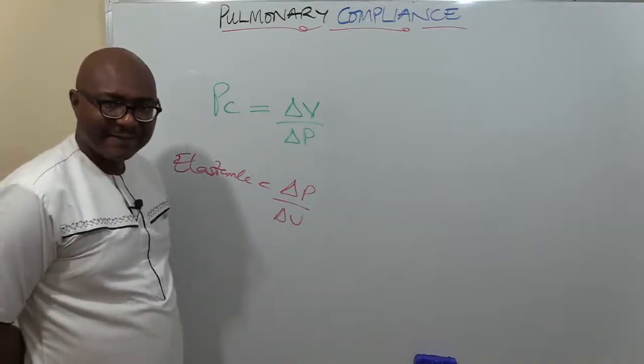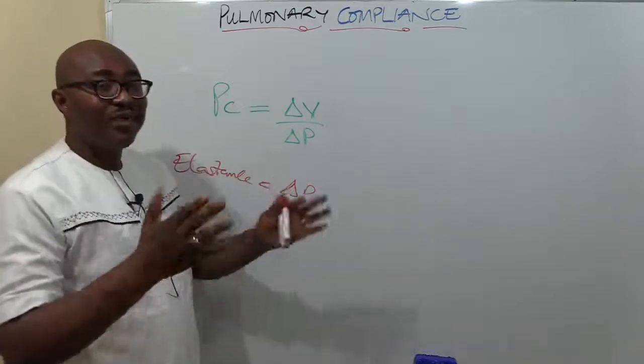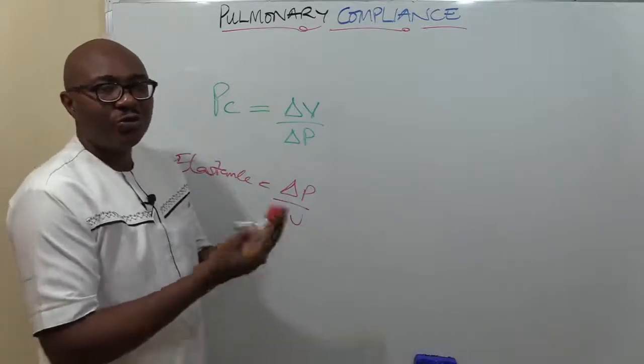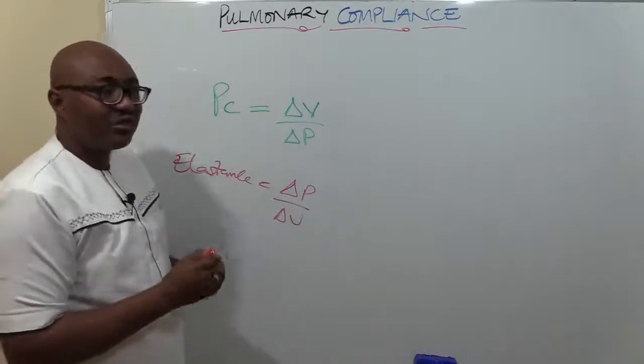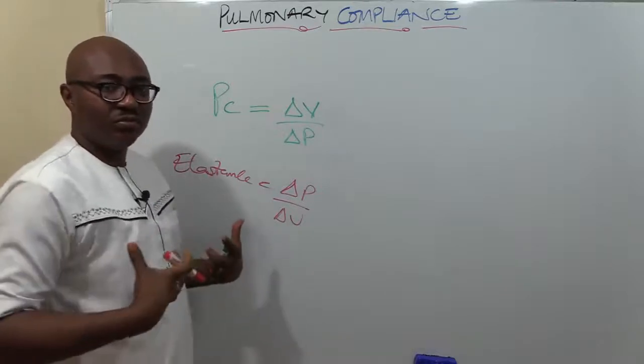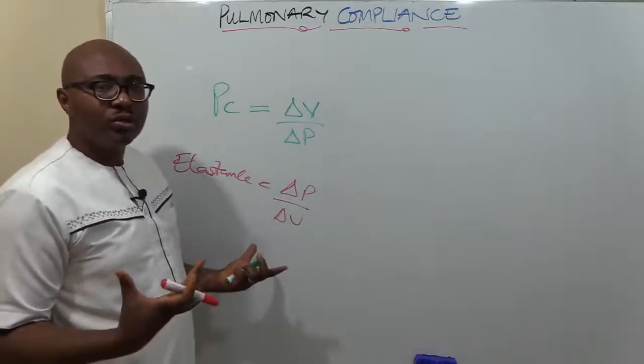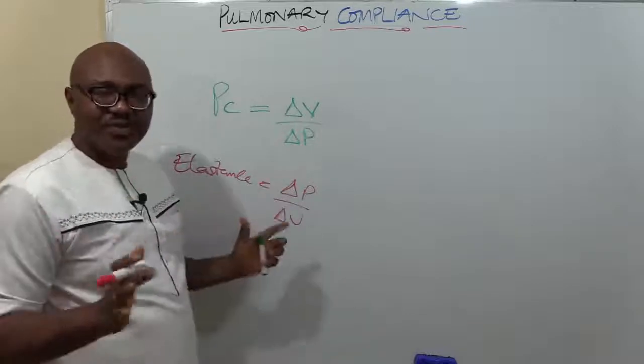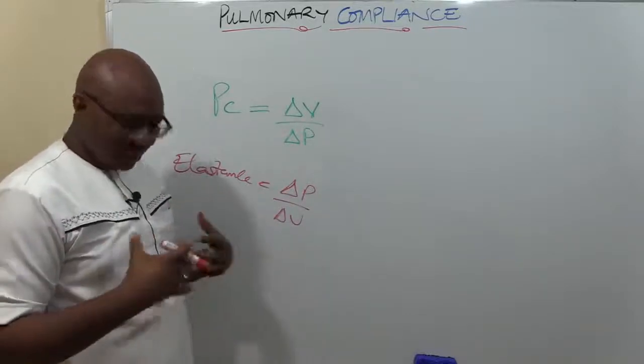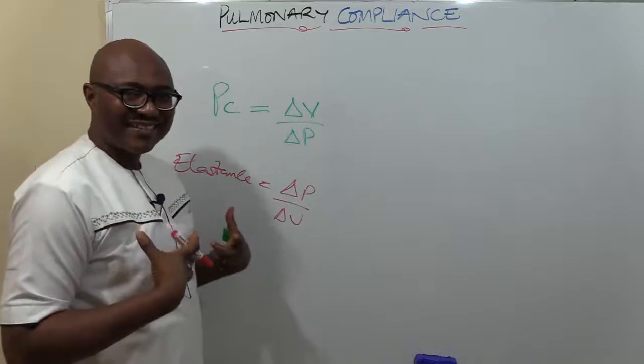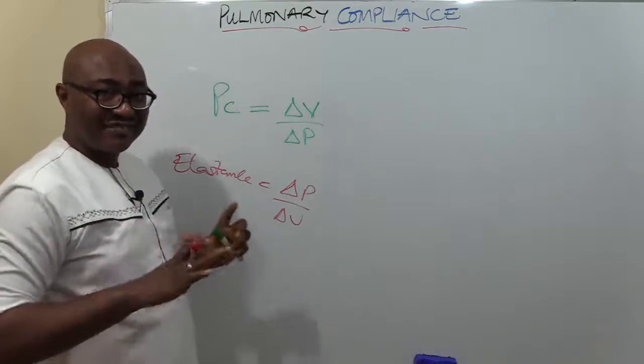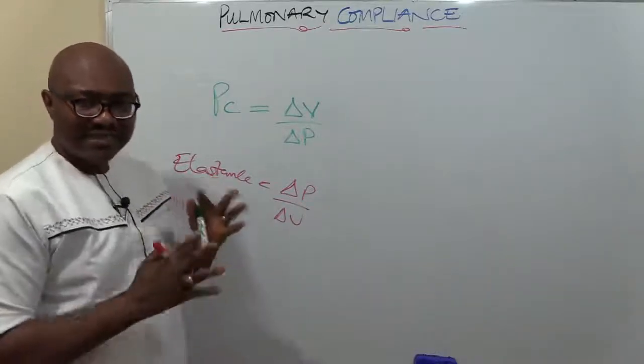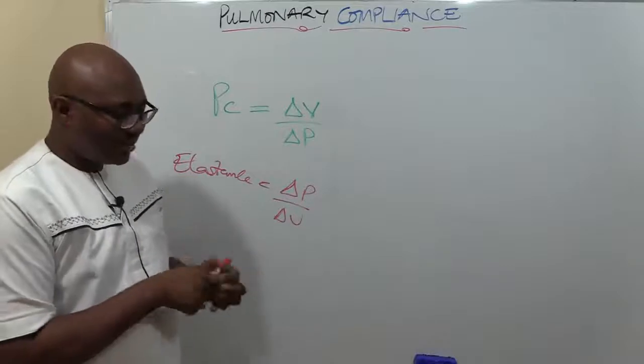Most times we usually talk about pulmonary compliance in two aspects: the lung compliance, compliance of the lungs, and you also have the compliance of the thoracic wall or chest wall. But let's focus on pulmonary compliance - mostly the same principles apply. The chest or the lungs, they are attached to the chest wall in a very special way.